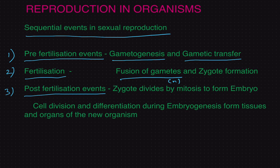When two haploid gametes fuse, it results in the formation of a zygote, which is diploid. The zygote is known as the vital link between two generations, and it is also the first cell of a new organism.